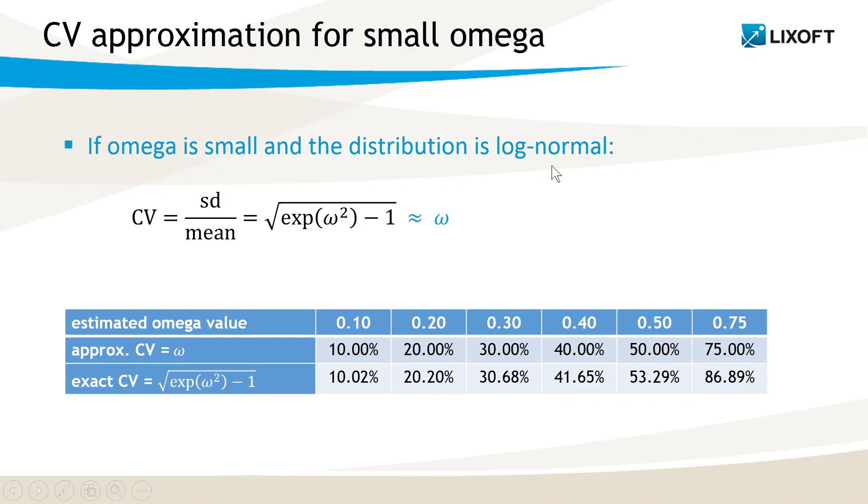If I have a log-normal distribution and omega is small, then this formula can be approximated by omega directly. So the omega values in the Monolix output are already an approximation of the coefficient of variation. In the table here, you can see the difference between the exact coefficient of variation and the approximate value for increasing omegas. We can see that for omega values up to 0.3, there is less than a 1% difference between the approximation and the exact value.